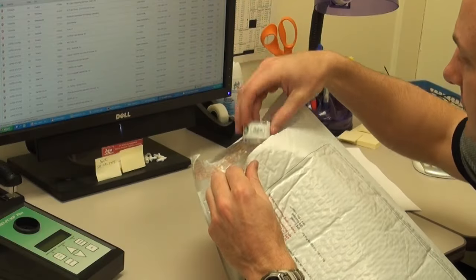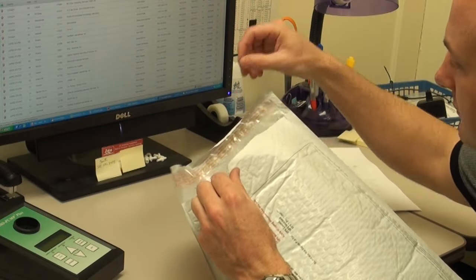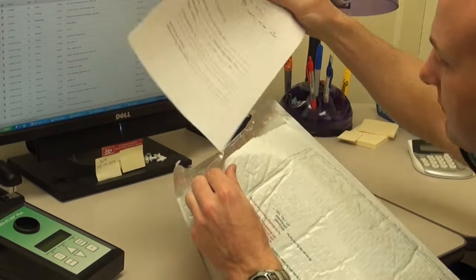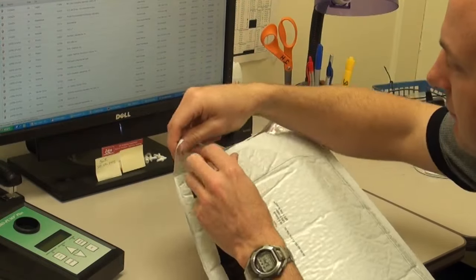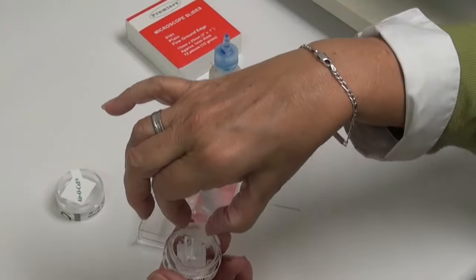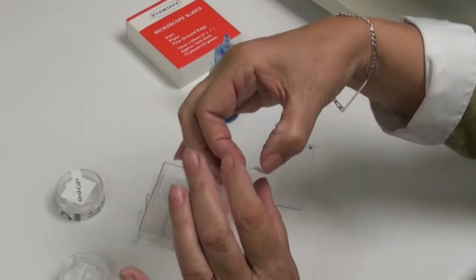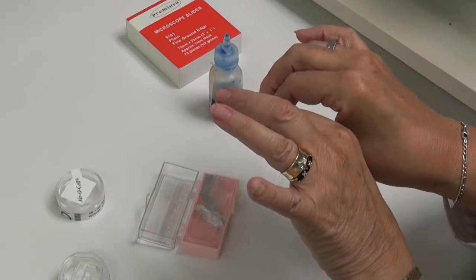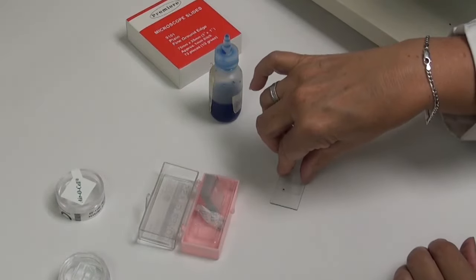After the sample is taken, the AeroCell cassette is sent for analysis to any one of a large number of qualified laboratories. At the lab, the glass slide is removed from the housing, and direct microscopic analysis can be immediately performed.